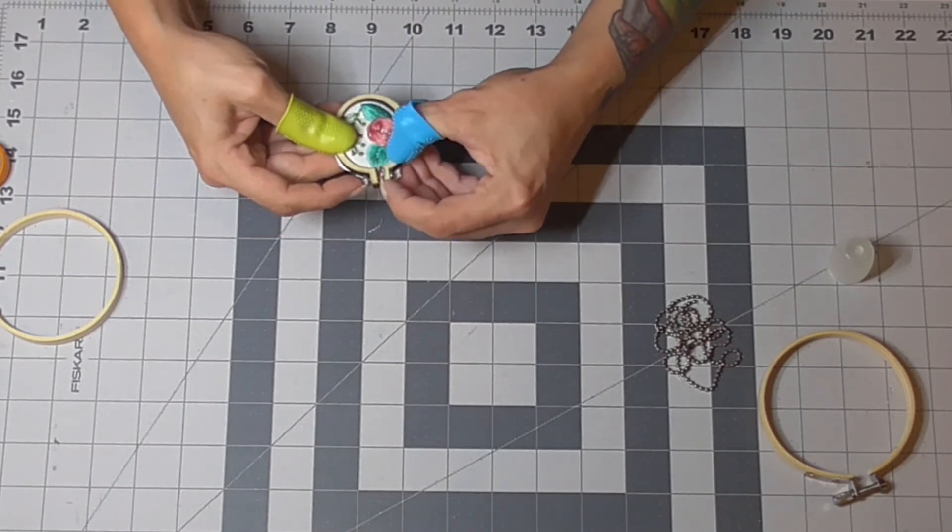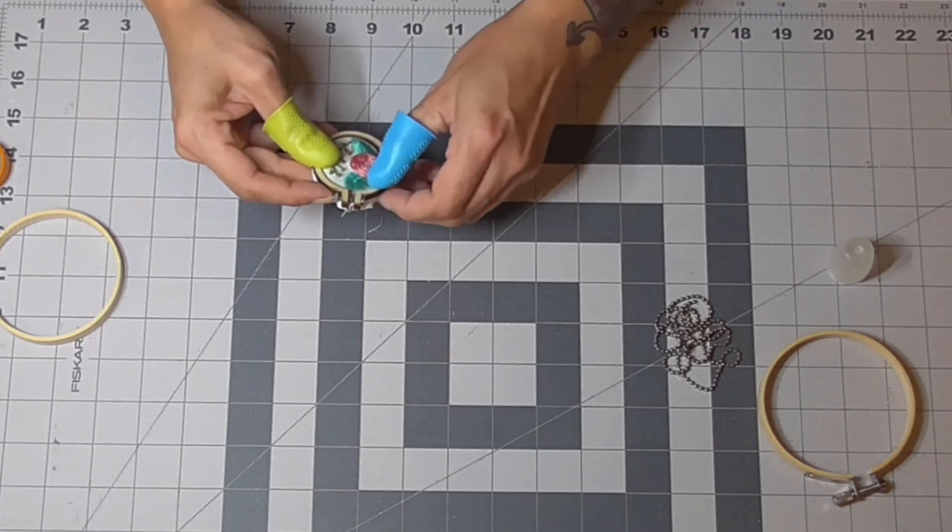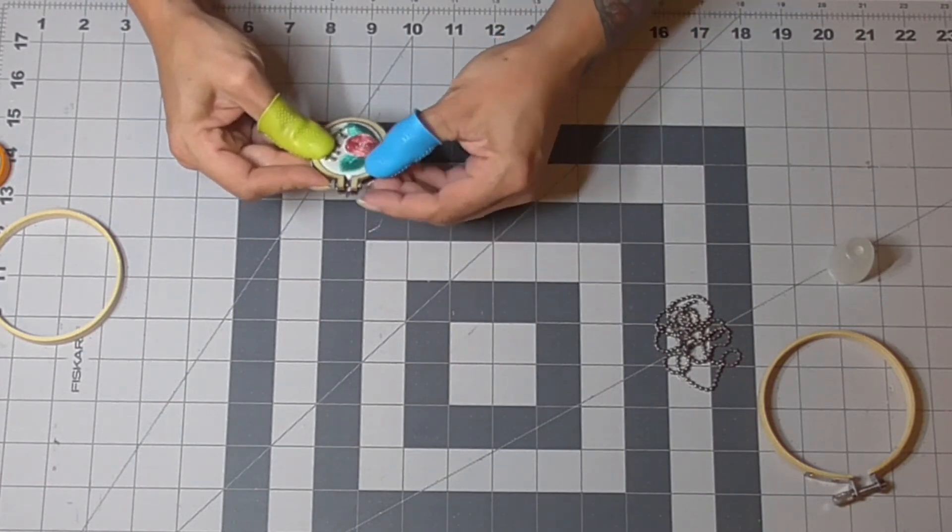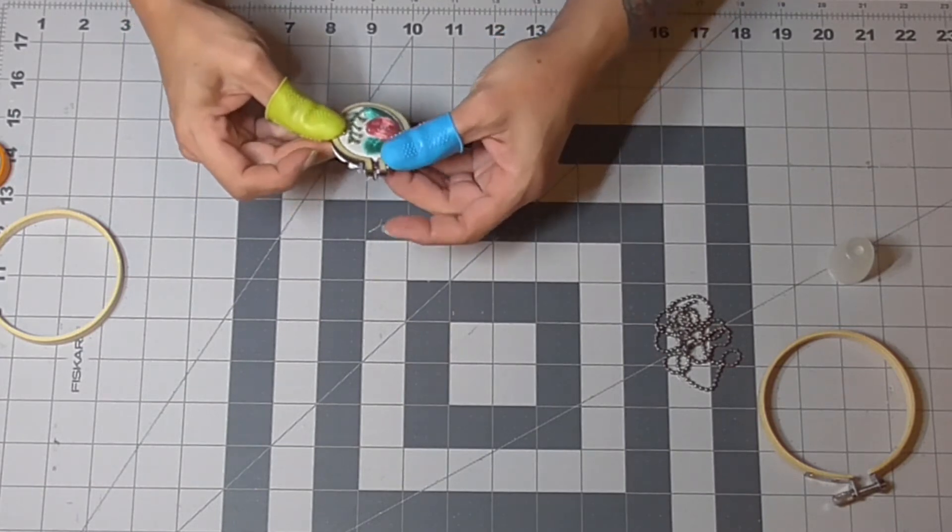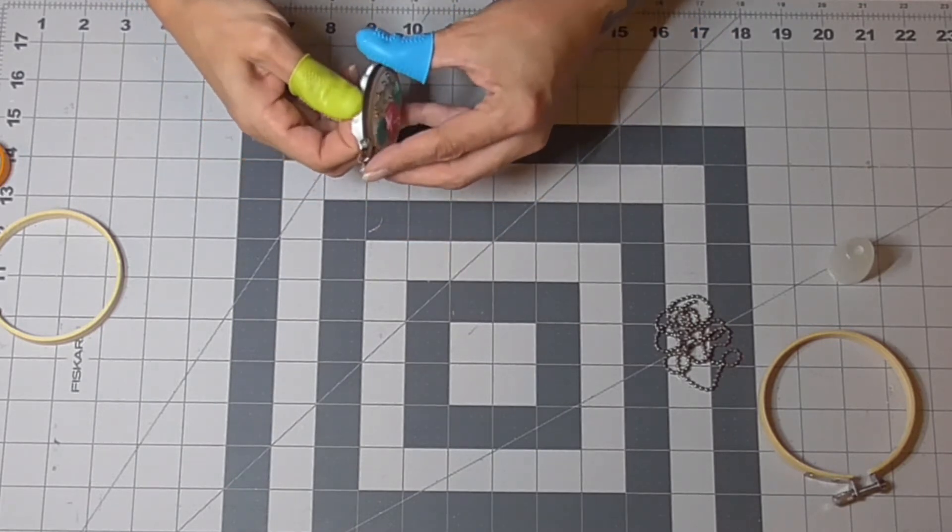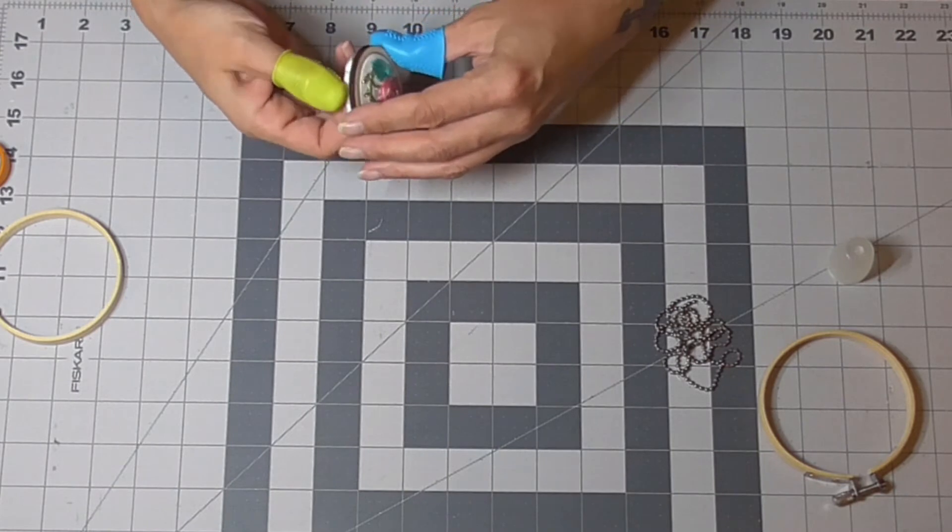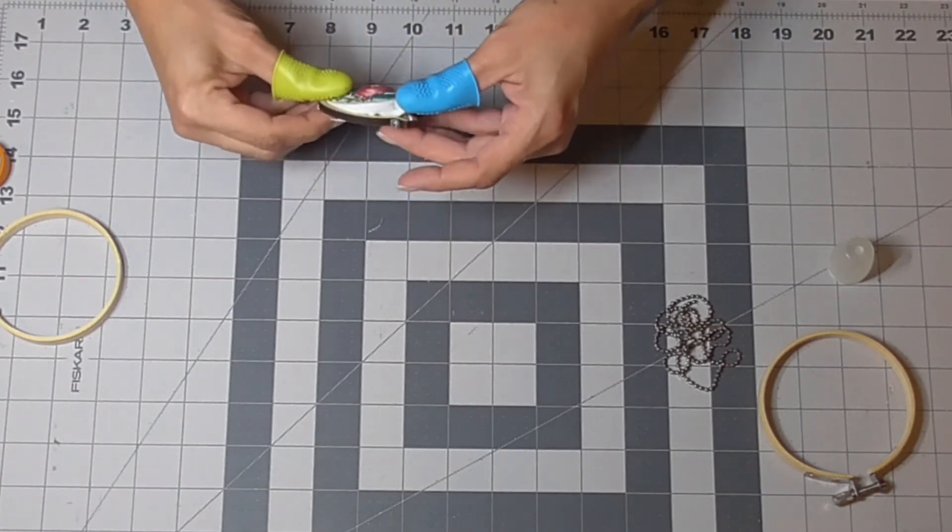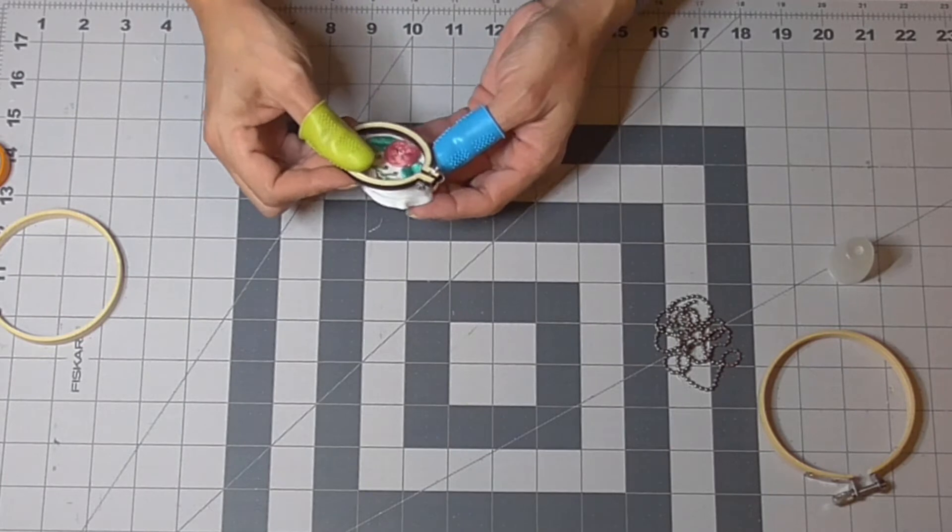These hoops do not want to stay open. There, just pull on your edges a little bit, or just pull it all the way through.